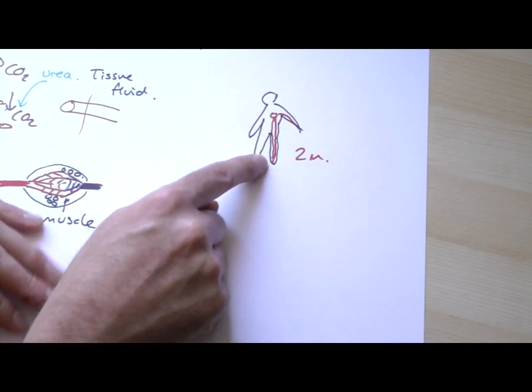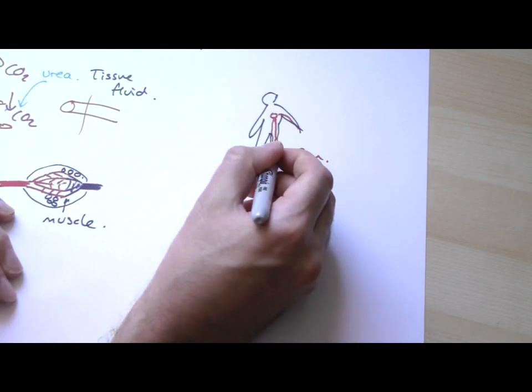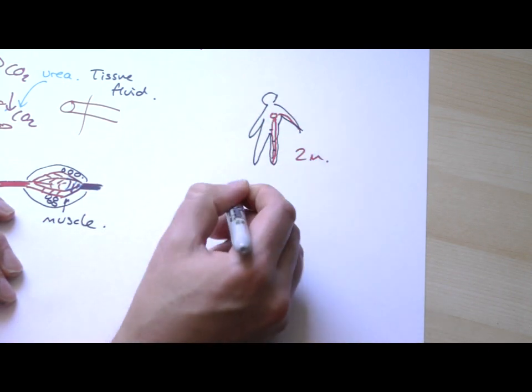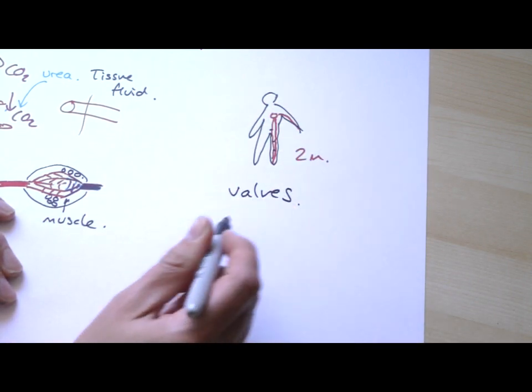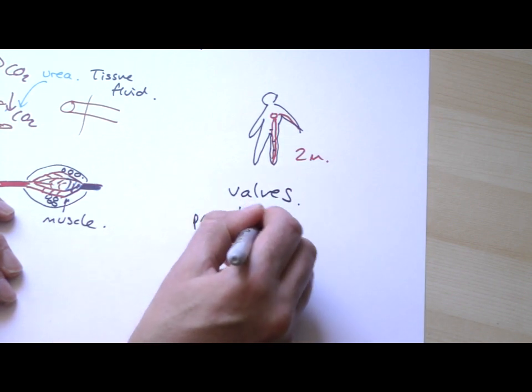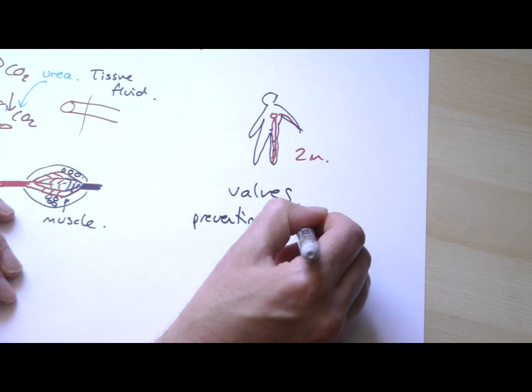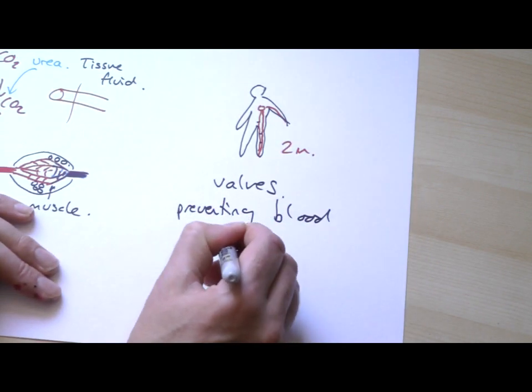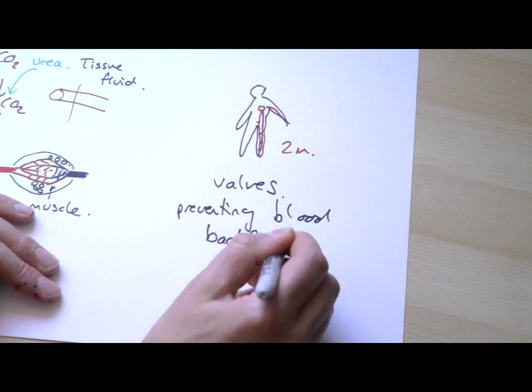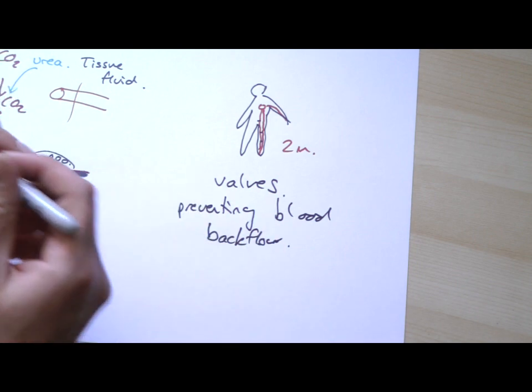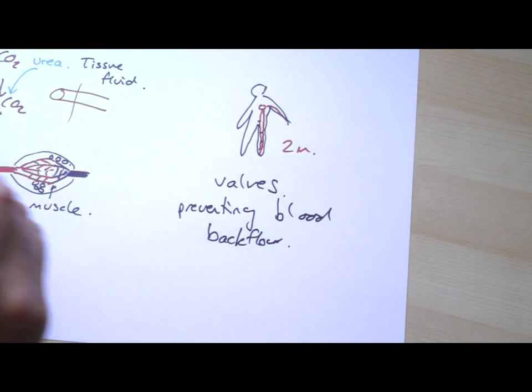What you have to do to stop that happening is in the veins, where the blood isn't under as much pressure, you have to have valves. They're doing exactly the same job as in the heart—they're preventing the backflow of blood, preventing it going back in the wrong direction.